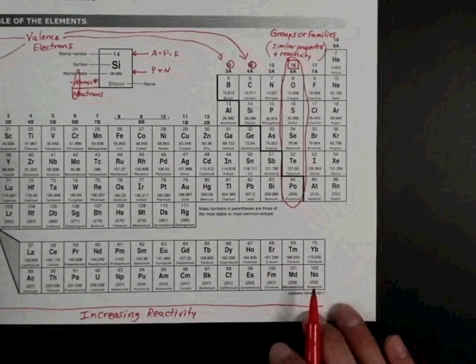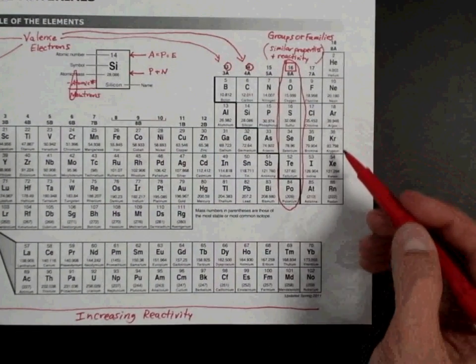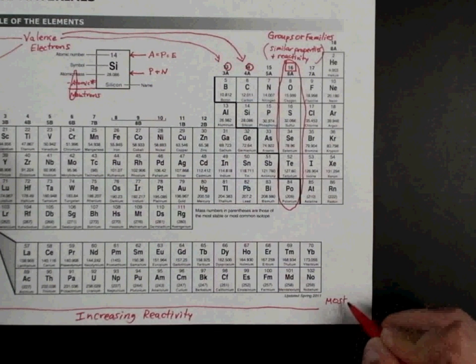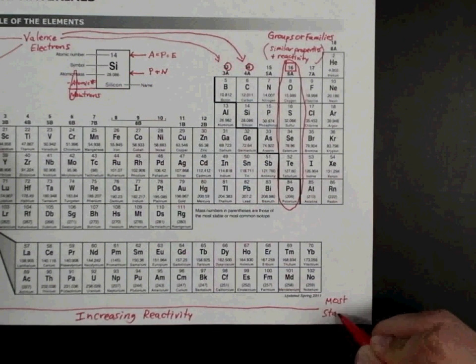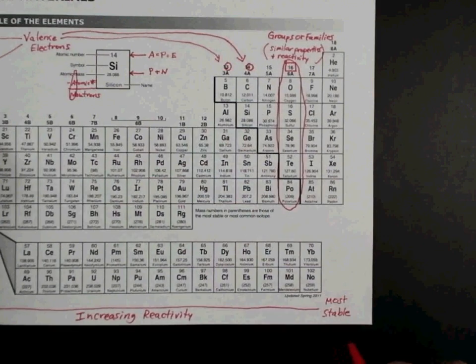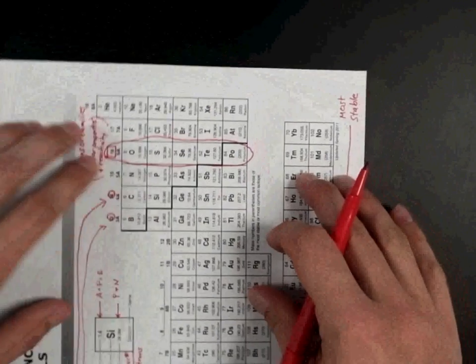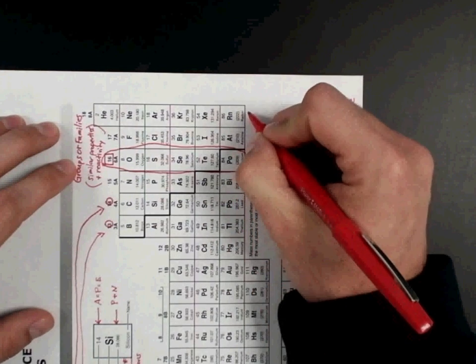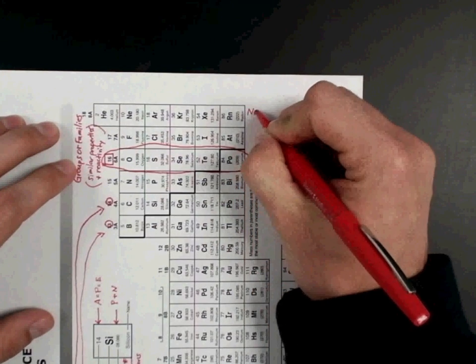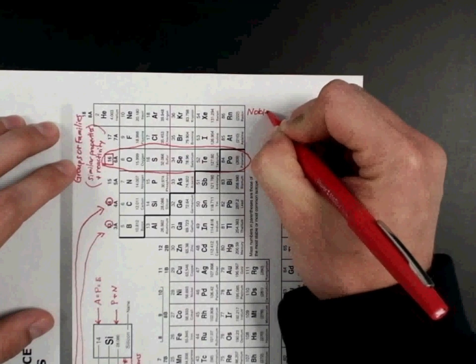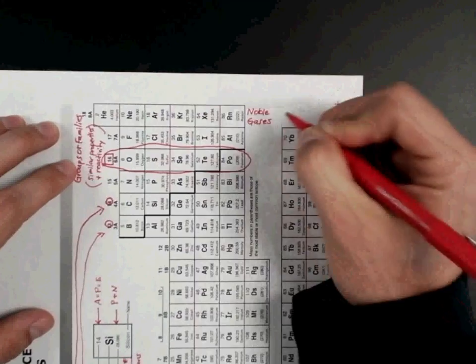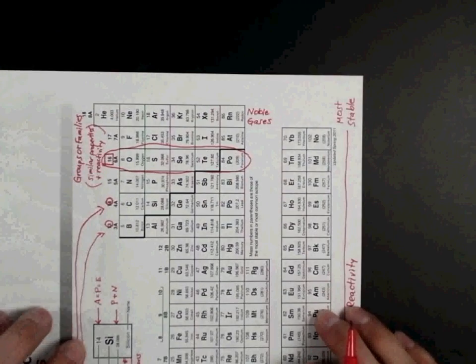Now, going back to the other side, group 18, these are the most stable. So I'm going to write most stable down here. And this group has a special name. It's called the noble gases. Just underneath the element radon, I'm just going to write noble gases, just in case that happens to pop up on a test. But these guys are real stable. They're not giving any electrons away. Their electron shells are totally full.